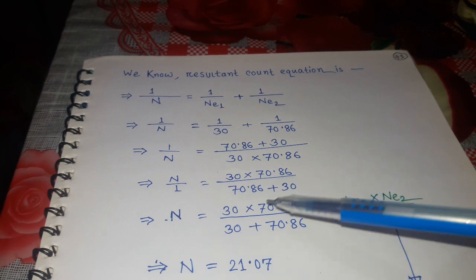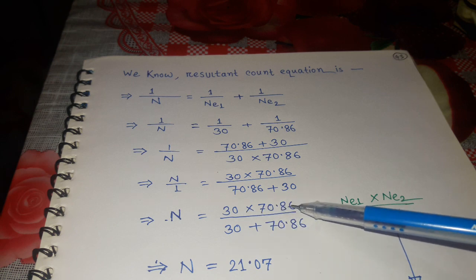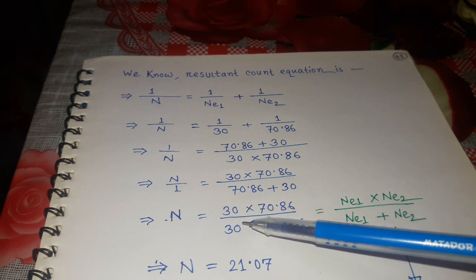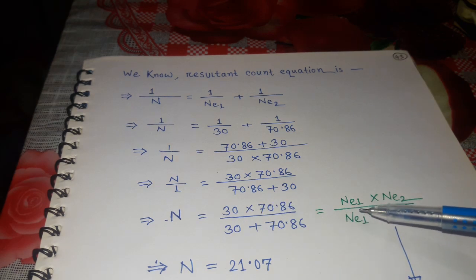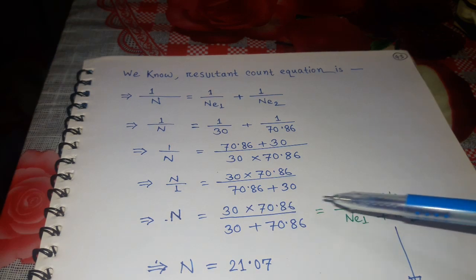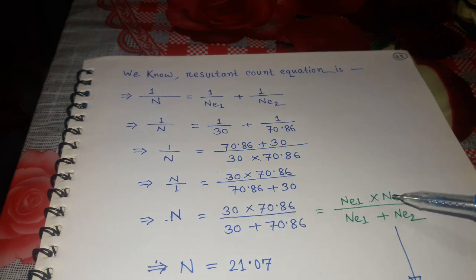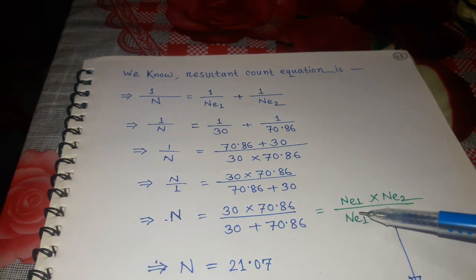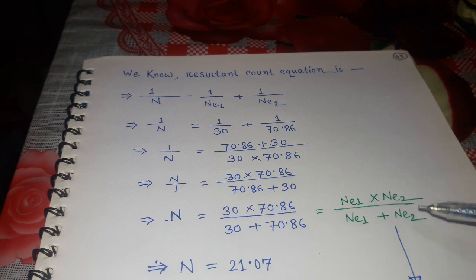You can see here the resultant count equals 30 multiplied by 70.86, divided by 30 plus 70.86. Here 30 single was N1 and 70.86 was N2, and in the denominator 30 single was N1 plus 70.86 as N2. So this is a shortcut formula for the resultant count.